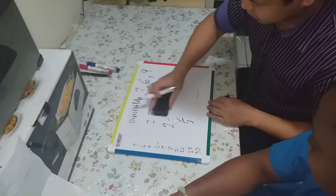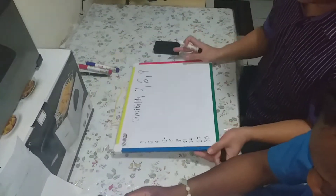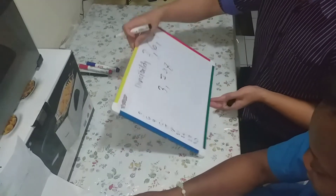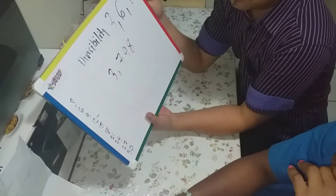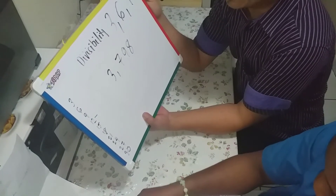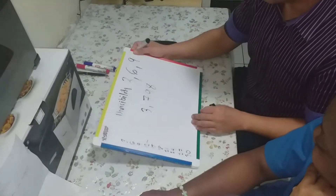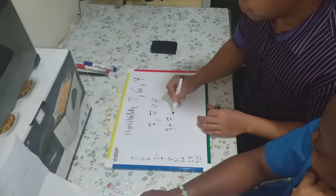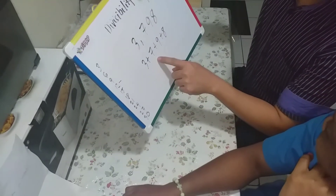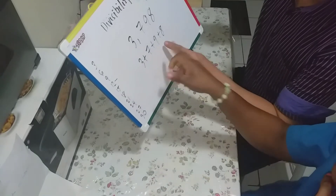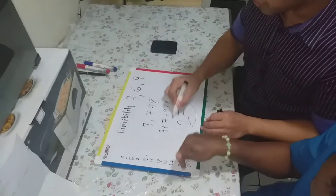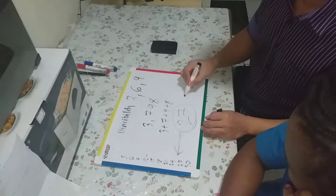Next example is 3,798. Do you think it's divisible by 3? You need to add again to find out. So, 3 plus 7 plus 9 plus 8. 3 plus 7 is 10, plus 9 is 19, plus 8 is 27. So 27 is divisible by 3.